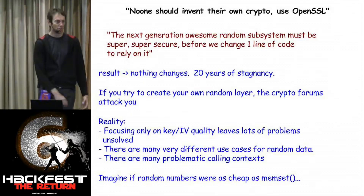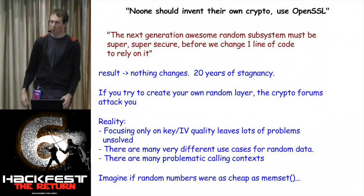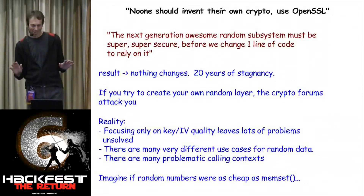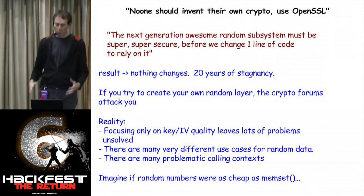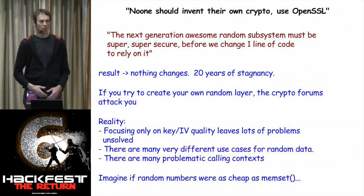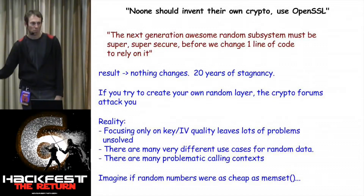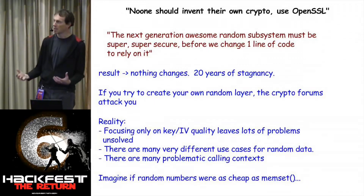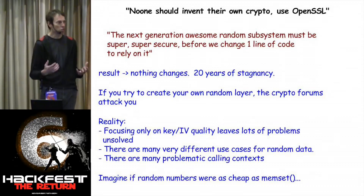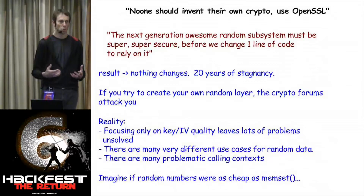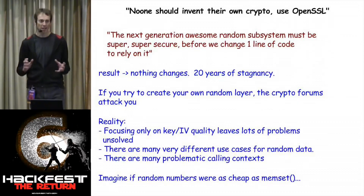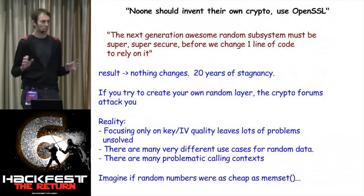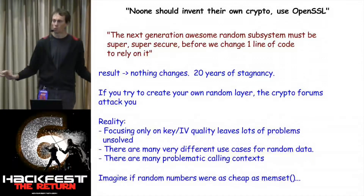Of course there's the meme that you shouldn't invent your own crypto — you should use OpenSSL, although that meme took a pretty big whack over the last six months. The problem is people keep telling you that you can't go invent the random number subsystem on your own. But that same sort of message is given to everybody, and it discourages anyone from even trying to build a layer that will do the right thing. So twenty years of stagnancy — high-availability random numbers don't end up at all the parts of the ecosystem where we need them.